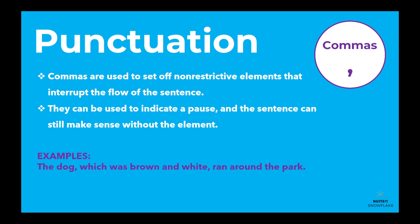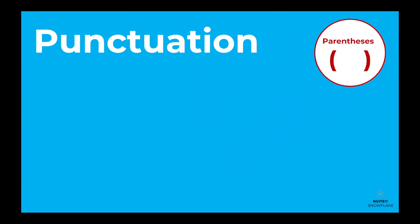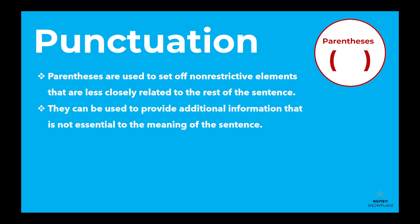For example: 'The dog, which was brown and white, ran around the park.' 'My sister, who is a doctor, lives in Chicago.' Parentheses are used to set off non-restrictive elements that are less closely related to the rest of the sentence. They are often used to provide additional information that is not essential to the meaning of the sentence.